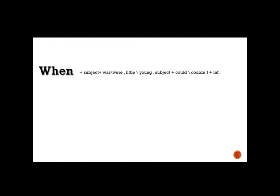Now we're going to talk about 'when' clauses. We use 'when' clauses to link between two sentences. The sentence structure is: when + subject + was/were + little/young + subject + could/couldn't + verb in infinitive. For example: When I was young, I couldn't count to ten.